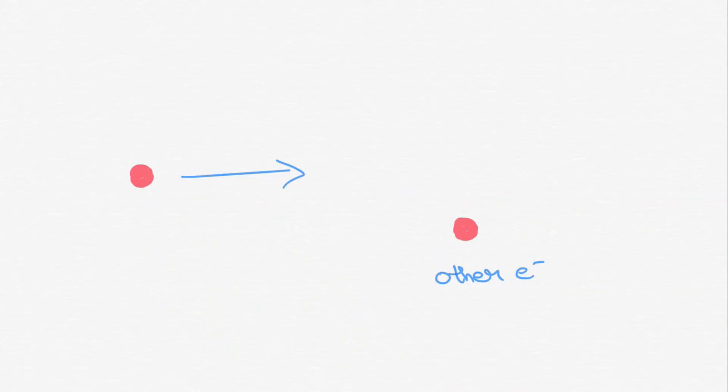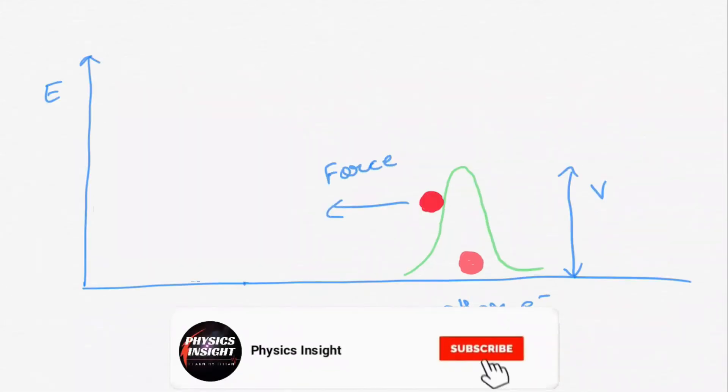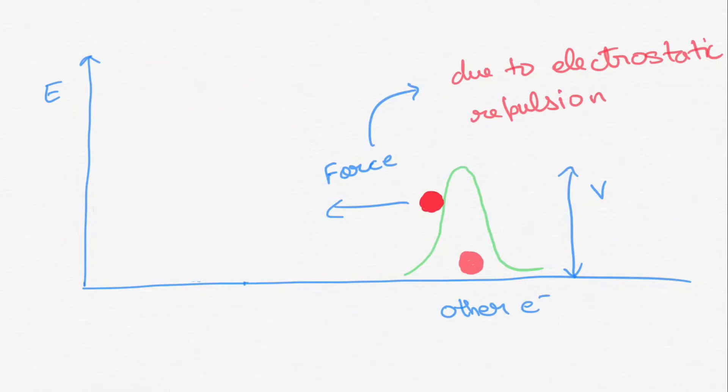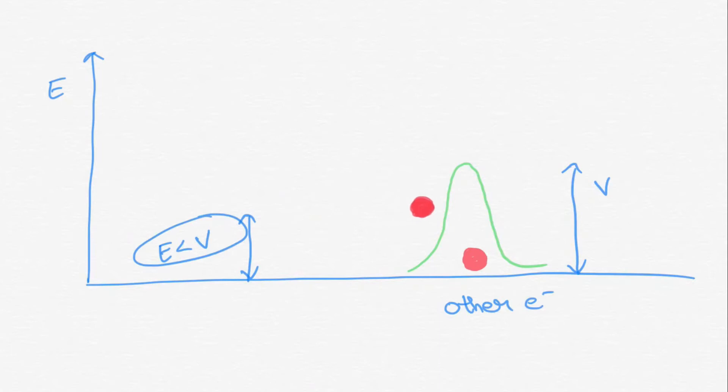So due to this electrostatic repulsion of the other electron, there is a region of space where the influence is felt by the first electron while passing it. When the first electron tries to cross this region, the second electron exerts force on it. And if energy of the electron is not sufficient, i.e. energy is less than V0, it will bounce back and remain on the left hand side of the barrier.